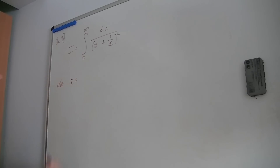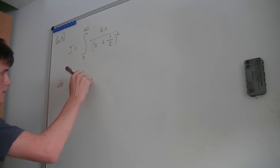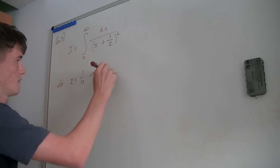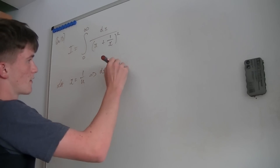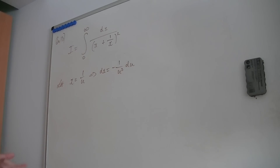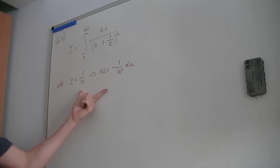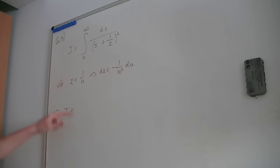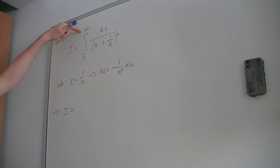This substitution x = 1/u also implies that dx equals minus 1 over u squared du. Knowing this, we can substitute these variables into I.